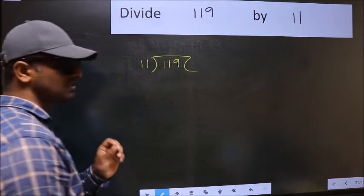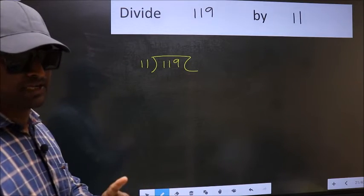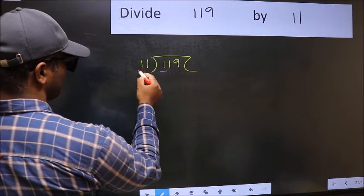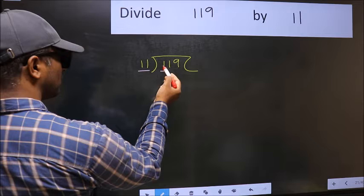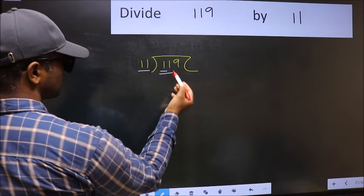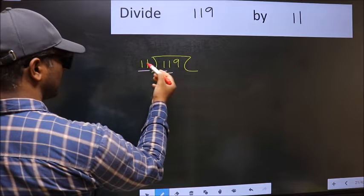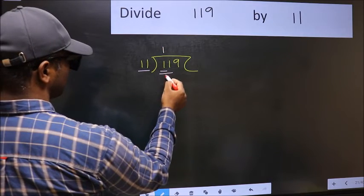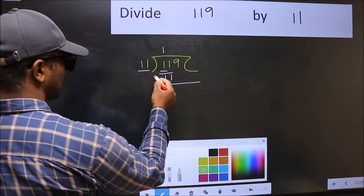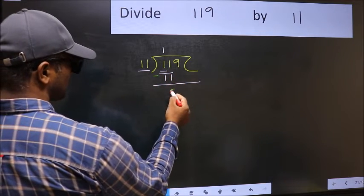This is your step 1. Next, here we have 1 and here 11. 1 is smaller than 11, so we should take two numbers: 11. When do we get 11 in the 11 table? 11 ones is 11. Now we should subtract: 11 minus 11, 0.